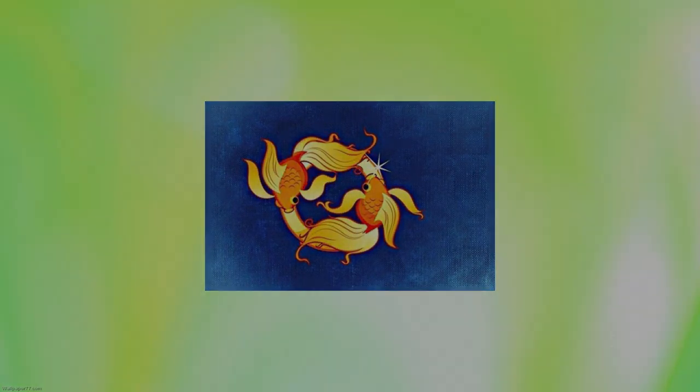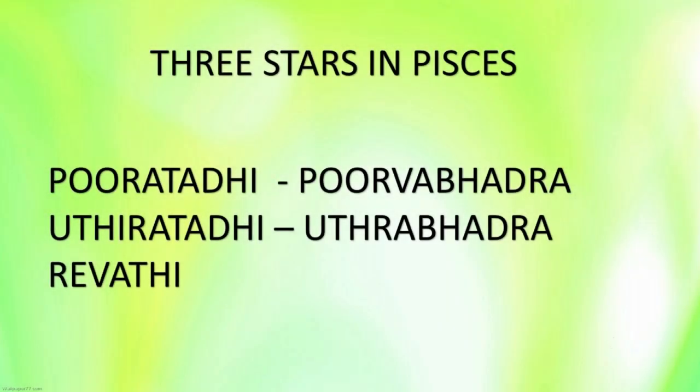The stars residing in the house of Pisces are: the fourth pada of Purvabhadra, all four padas of Uttrabhadra, and all four padas of Revati — first, second, third and fourth pada. These nine padas of three stars are present in the house of Pisces.